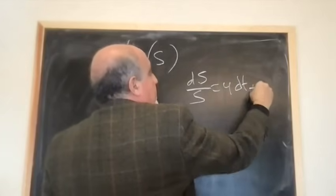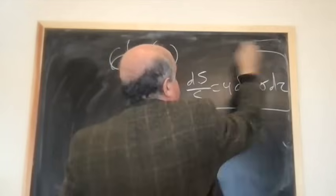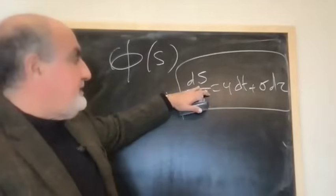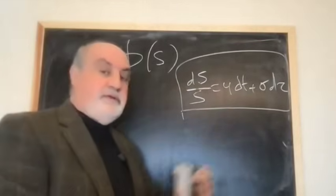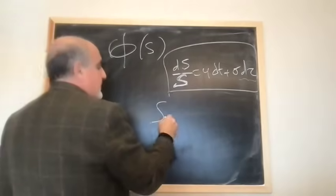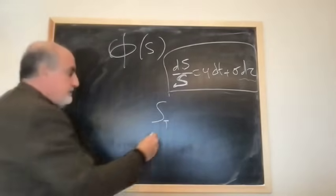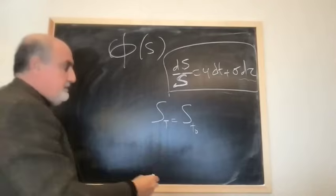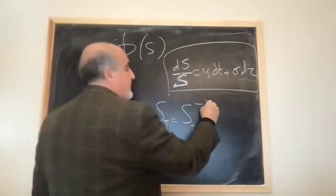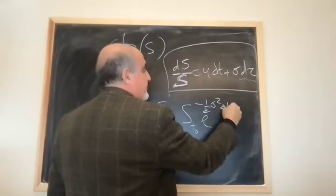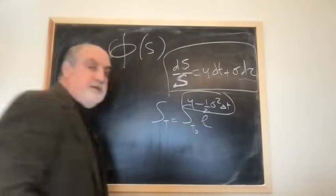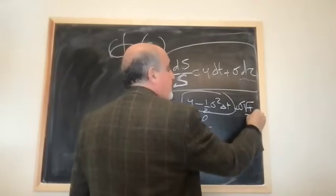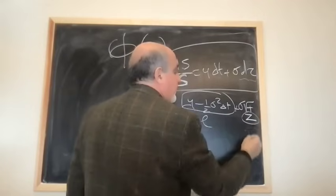So if the return of S follows a Brownian motion, that's dS over S, mu dt plus sigma dZ, to use continuous time stochastic differential equation, instead of dS equal to mu dt plus sigma dZ that would be the equivalent for Bachelier, I have here S cap T is going to be S zero times e minus one half of sigma squared delta T, we'll use mu.